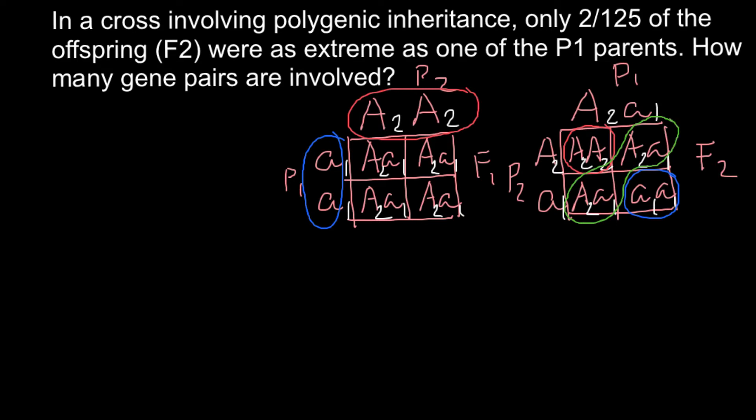As you see, in the F2 generation we would have segregation, with 1 out of 4 being the same phenotype as one parent and 1 out of 4 the same phenotype as the other parent. Of course, if we would have 2 genes and 4 alleles, the table would contain 16 cells and much more variation. The more genes, the more variation we would have.